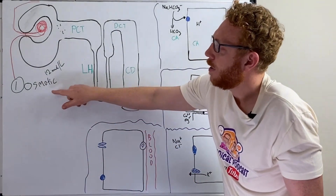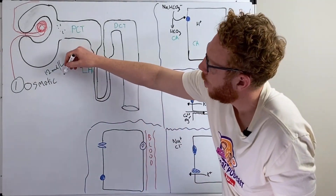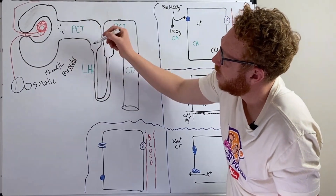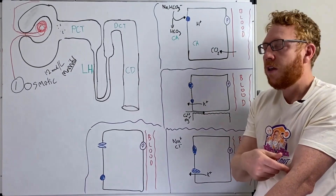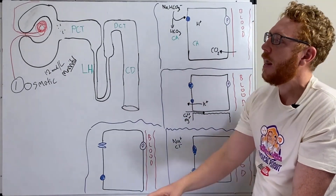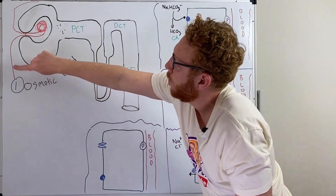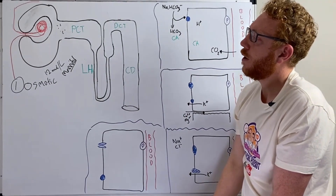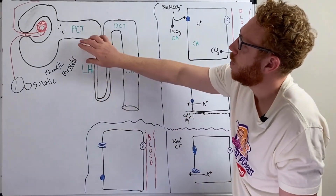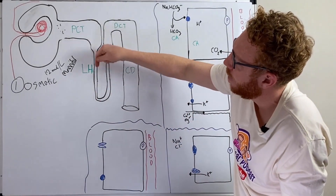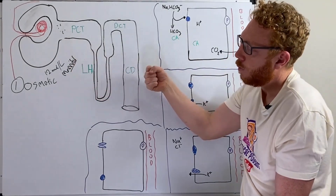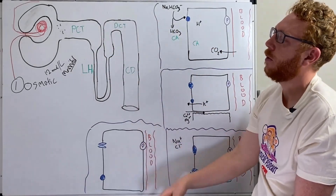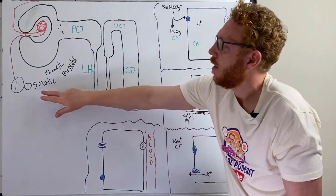The osmotic diuretic — the most common example is mannitol, which is essentially just a sugar. What happens is we put the mannitol into the blood and when it comes to the kidney, the main parts where water is normally passively reabsorbed — the PCT and the descending loop — the mannitol will pull the water with it. Therefore the urine volume increases, and then we urinate it out.